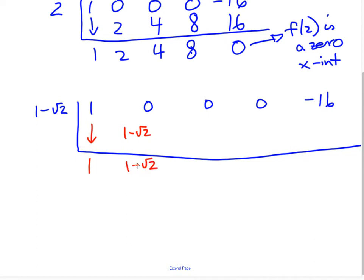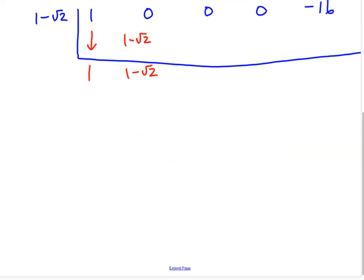So 0 plus this will just be 1 minus root 2. Now I've got to multiply this by this, but it's a binomial. Let me put it down here. It's 1 minus root 2 times 1 minus root 2. So I'm going to have to foil that.